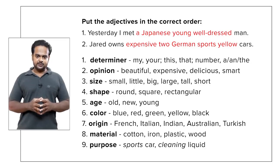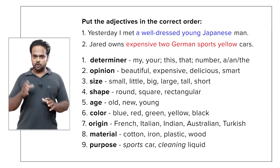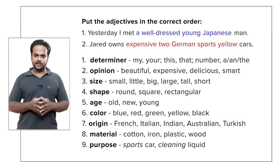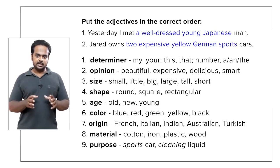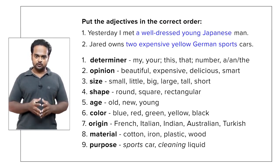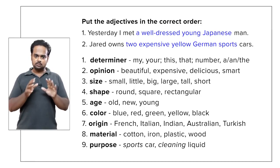OK, in the first sentence we should say: Yesterday, I met a well-dressed young Japanese man. The word 'well-dressed' is an opinion, so it comes first. Age comes next: young. And finally, origin: Japanese. In number two: Jared owns two expensive yellow German sports cars. Notice here that 'sports' is the purpose, so it comes last. If you didn't get these right, don't worry — this topic is often quite difficult at the beginning, but you will get better at it with time and practice.